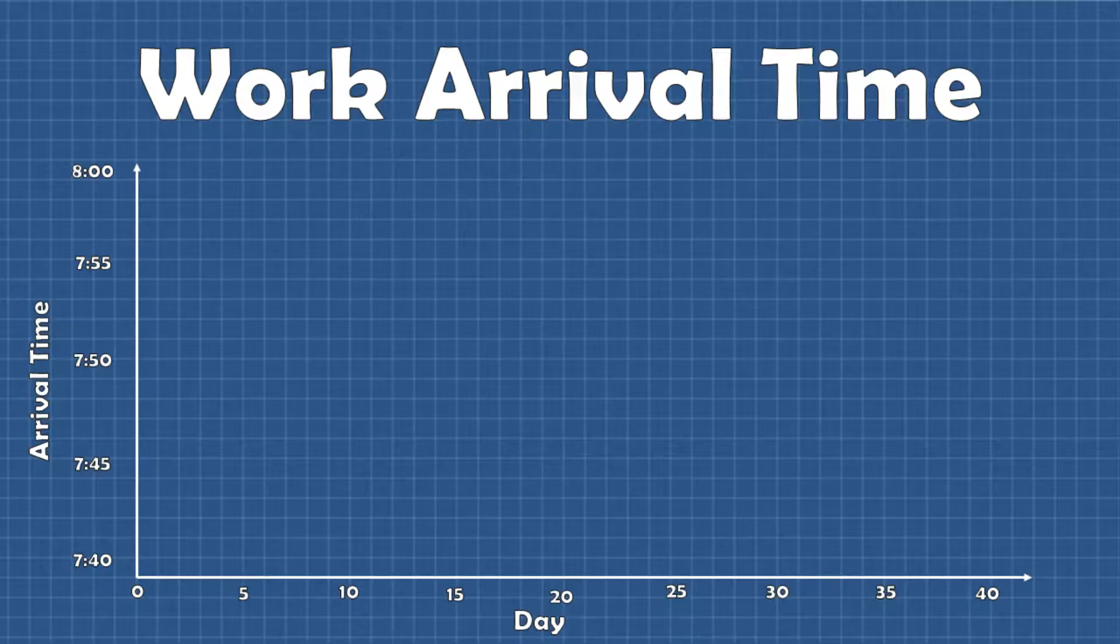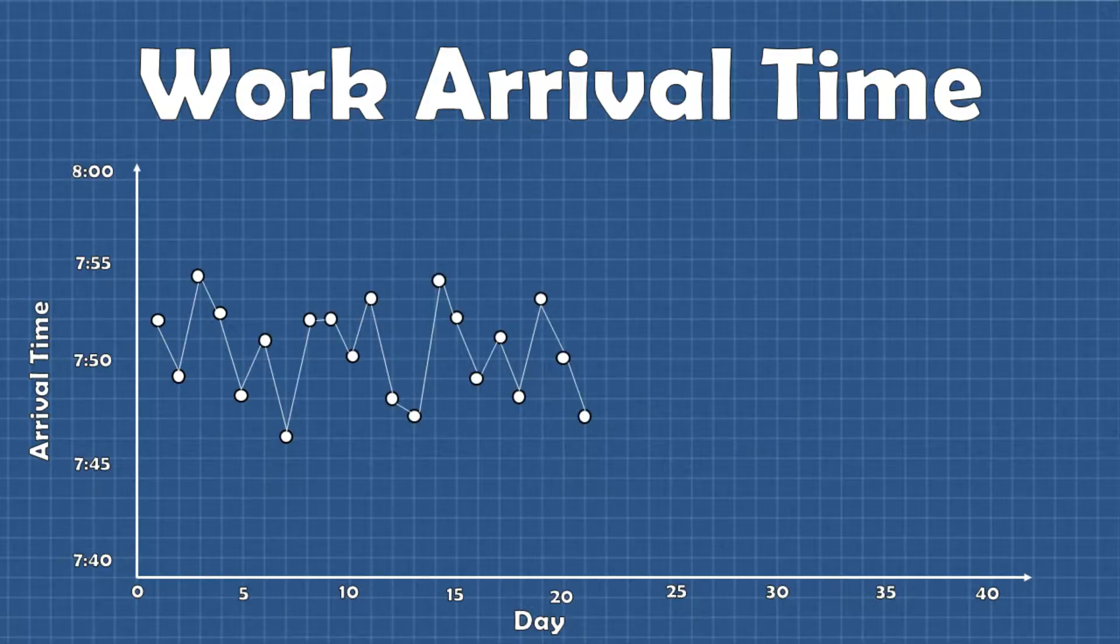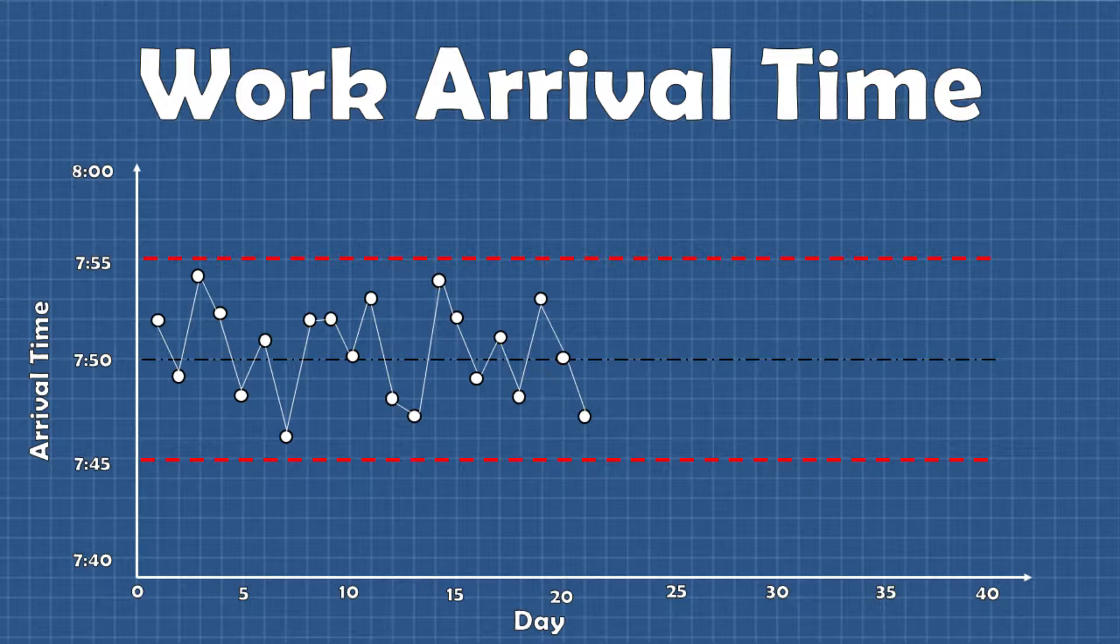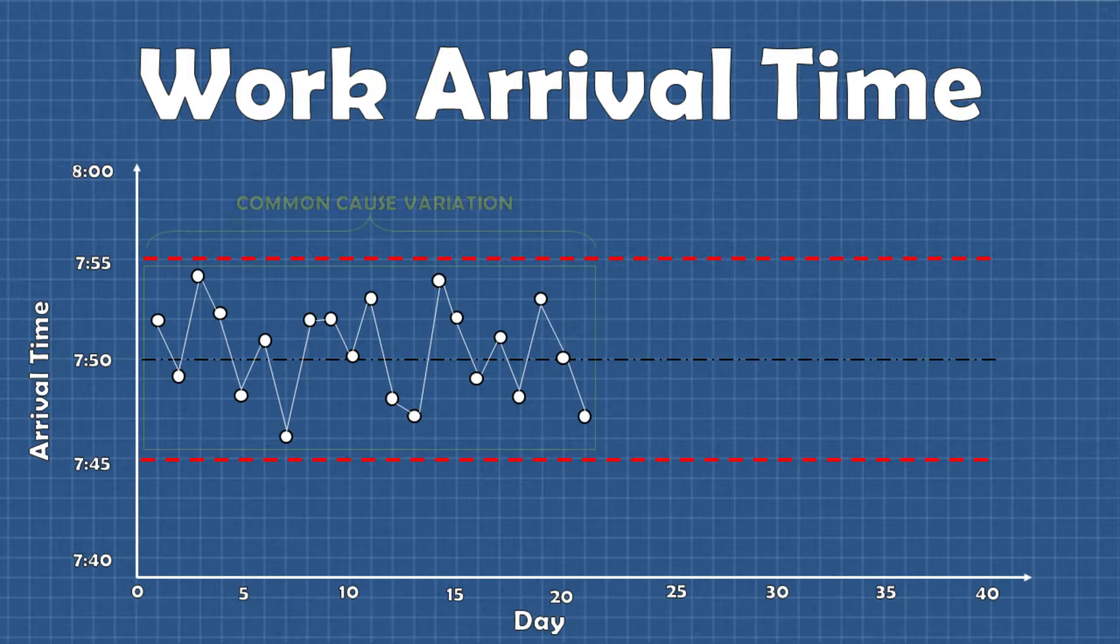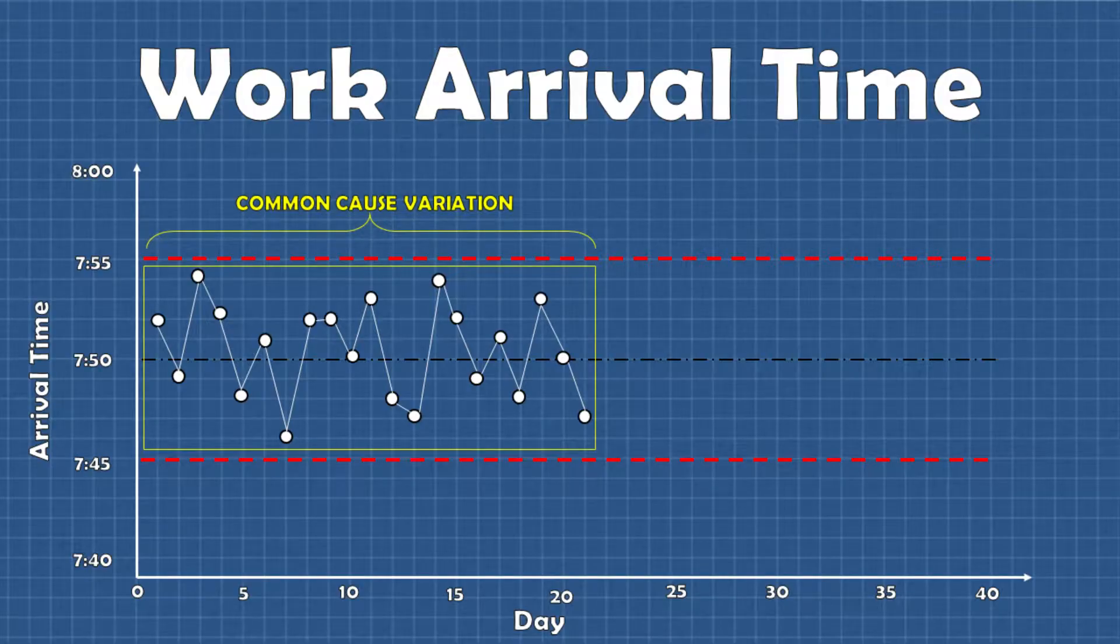Think about the time that you get to work every day. Is it exactly the same time? Or would you say you usually arrive between a certain range of times? Say you usually arrive to work between 7:45 and 7:55 with an average time of 7:50. This range represents common cause variation. It is predictable. In other words your boss can count on you to arrive in this time range as long as the general process stays the same.